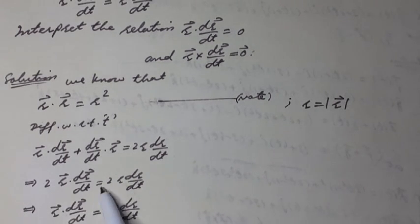It can be written as R vector dot dR vector over dt equal to R dR over dt. Hence the solution.